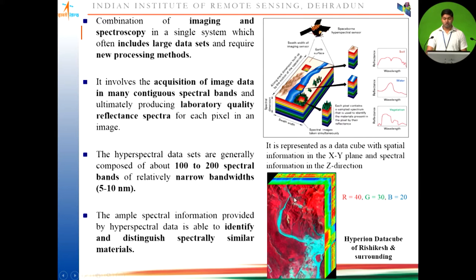Hyperspectral data normally consists of 100 to 200 spectral bands with a narrow spectral bandwidth ranging from 5 to 10 nanometers. You can see one example — the Hyperion standard false color composite data cube of Rishikesh and its surroundings — where the band combination used is 40, 30, and 20, compared to 4, 3, 2 for multispectral data, indicating the much larger number of spectral bands available. These datasets are useful for distinguishing spectrally similar materials.